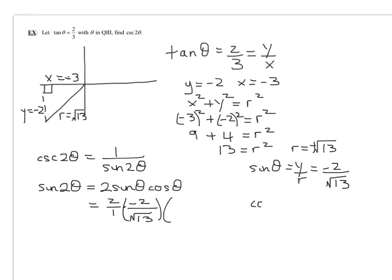Now we have to find the cosine of theta. Remember, that's x over r. x is negative three, r again is the square root of 13.